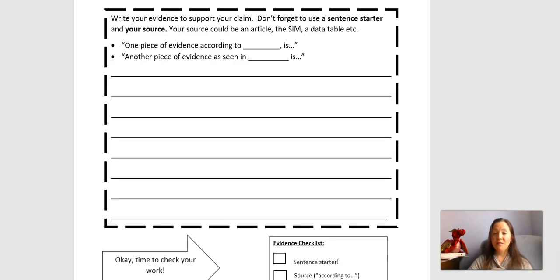So here's where you write your evidence. We always want to use sentence starters whenever we're writing evidence, reasoning, claims. We want full complete sentences. So we've given you some sentence starters. And remember that we also need to include our source. Where do we get this information? Some examples of evidence that we might pull from: data tables, the SIM, articles that we've read. Those are all great sources of evidence for this particular activity.